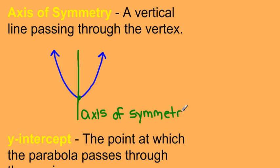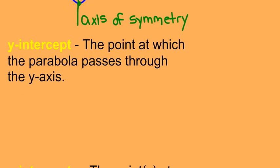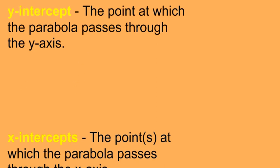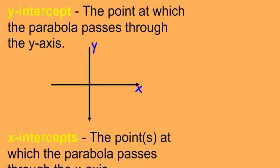The y-intercept is the point at which the parabola passes through the y-axis. If my parabola is situated and goes up in a certain position, the y-intercept is the point where it crosses the y-axis.